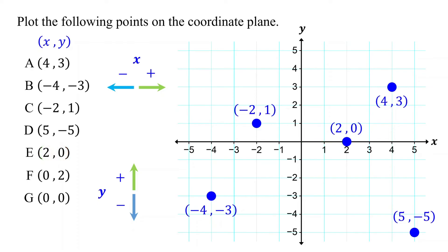Please feel free to pause the video and plot point F. The x-coordinate is 0, so you do not need to move left or right from the origin. The y-coordinate is positive 2, so start at the origin and move up 2 units. Then mark the point where you end up. This is the point (0, 2).